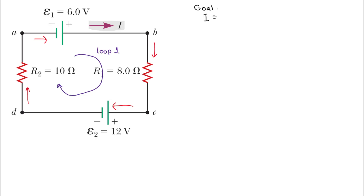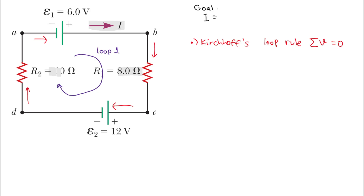We need to use Kirchhoff's Loop Rule. Kirchhoff's Loop Rule states that the sum of the voltages in a loop equals zero. However, we have unknown voltages across the resistors — the 8-ohm resistor and the 10-ohm resistor — and we don't know their polarities yet.